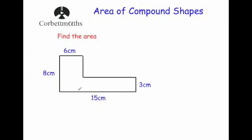The whole base is 15 across and this part is 6, so this missing side must be 9 centimeters because 6 plus 9 gives the total width of 15. The whole shape is 8 centimeters tall and this part is 3 centimeters, so this missing side is 5 centimeters because 5 plus 3 equals 8.